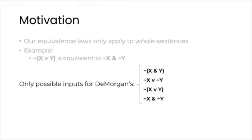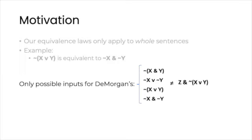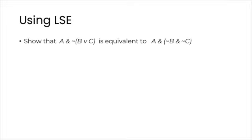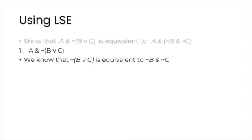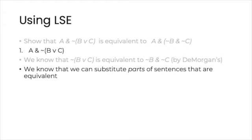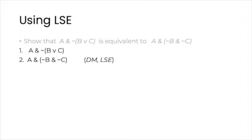That is, the sentences must be of one of these forms. But now, armed with LSE, we can apply De Morgan's to parts of sentences. For instance, suppose that you want to prove that a and not parenthesis, b or c, close parenthesis, is equivalent to a and parenthesis, not b and not c, close parenthesis. Then, we simply begin with 1, a and not b or c. We know by De Morgan's that not b or c is equivalent to not b and not c. And we know that by LSE, we can swap parts of sentences that are equivalent. So we can justify step 2 by the application of De Morgan's and LSE.